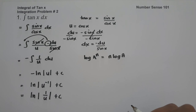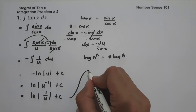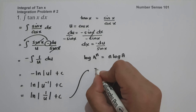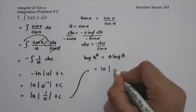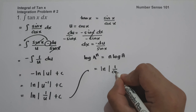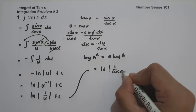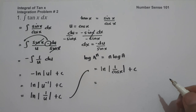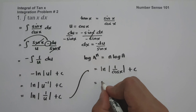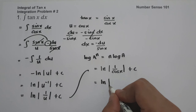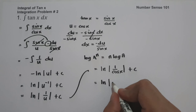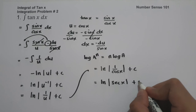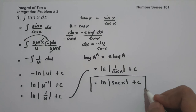Now let us substitute the value of u, which is cosine x. So we are going to have ln absolute value of 1 over cosine x plus C. And to write our final answer, this will be ln absolute value of sec x plus C. And this will be our answer.